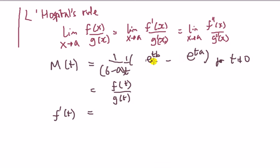Let me just check it again: b·e^(tb) minus a·e^(ta) — yep, yep. Okay, let's continue; otherwise I'd have been in a tight spot.